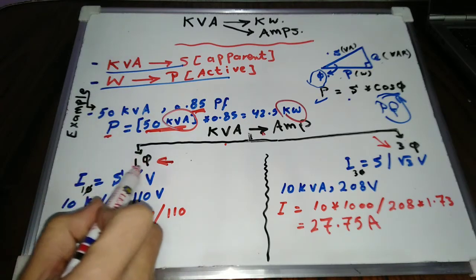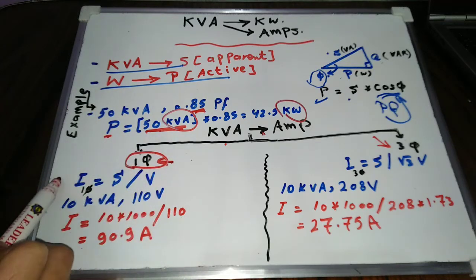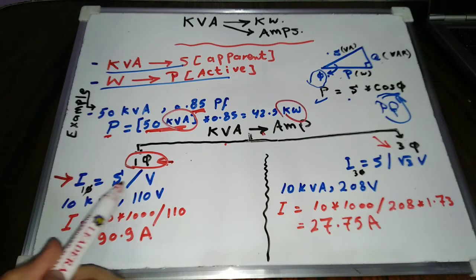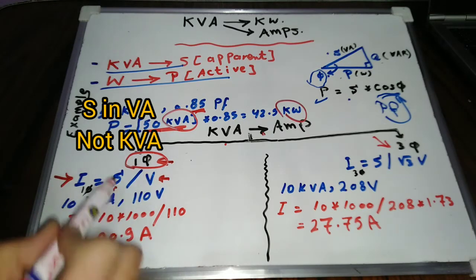In case of single phase loads, the equation is: Current I equals apparent power S in volt ampere, divided by voltage in volt.